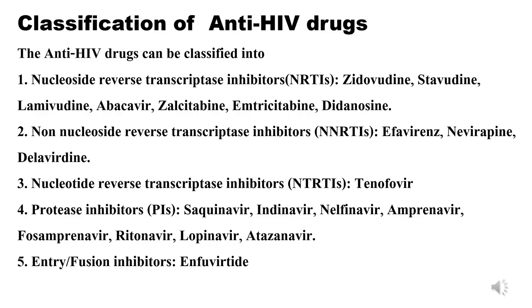Let's start with the classification of anti-HIV drugs. The anti-HIV drugs can be classified into five categories. Category 1: Nucleoside reverse transcriptase inhibitors (NRTIs) — examples: zidovudine, stavudine, lamivudine, abacavir, zalcitabine, emtricitabine, didanosine.